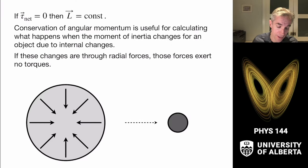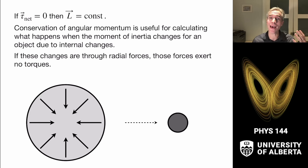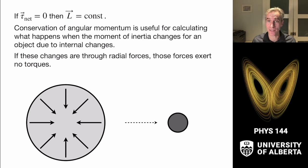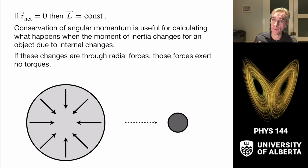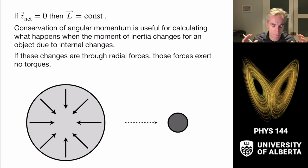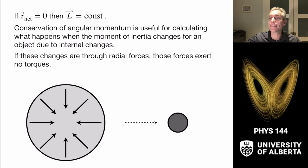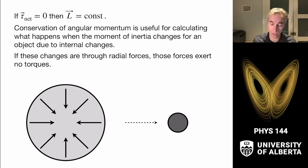This holds for any system of particles as long as internal forces act along lines between them — which is true for most rigid bodies. This gives us the rotational version of Newton's second law. If there are no net torques, we have a conservation law: the angular momentum of the system is conserved.